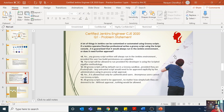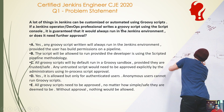Welcome to the certified Jenkins engineer certification catalyst series. This is the first question of this series regarding CJE 2020. A lot of things in Jenkins can be customized or automated using Groovy scripts. If a Jenkins operator or DevOps professional writes a Groovy script using the script console, is it guaranteed that it will always run in the Jenkins environment, or does it need further approval? Option A: yes, any Groovy script written will always run in the Jenkins environment provided the user has build permissions on a pipeline.